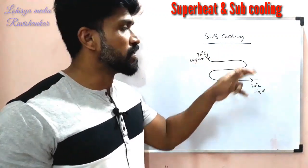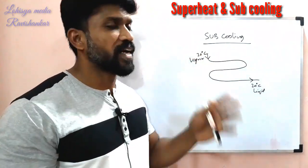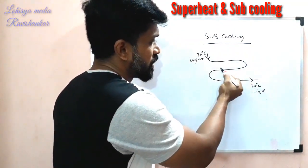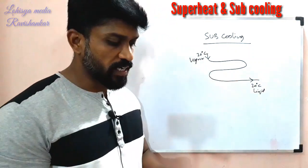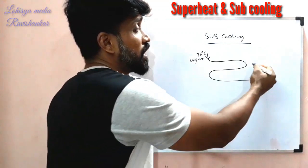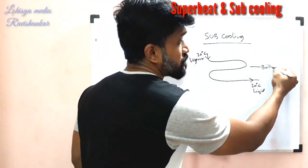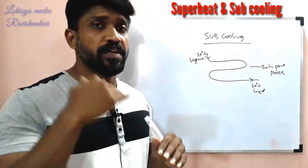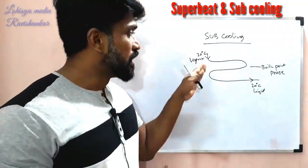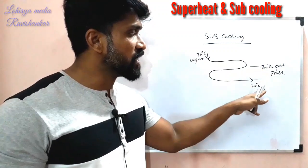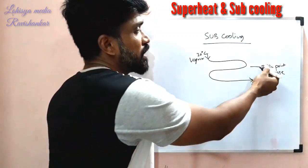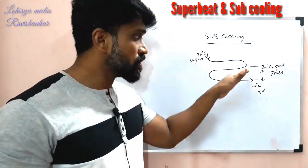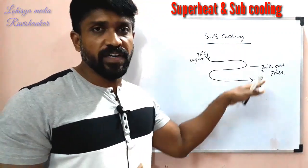Now, in my 30 degrees Celsius, the vapor is coming. When it comes to the fan or the ambient air, the vapor is cooling. This cooling produces liquid. What is the boiling point phase? As the boiling point phase comes, it matches the vapor. When the boiling point phase reaches the bottom, it becomes liquid at 30 degrees Celsius.